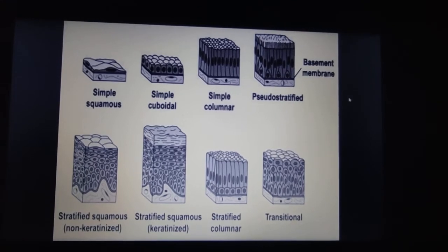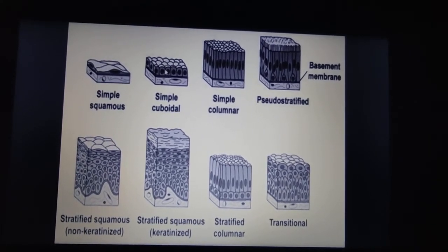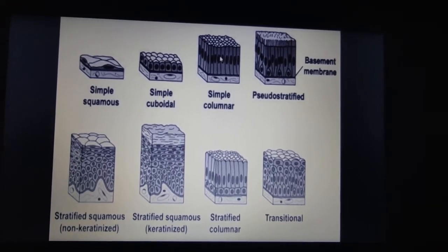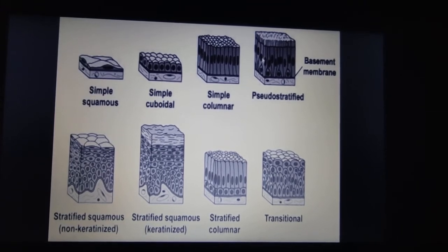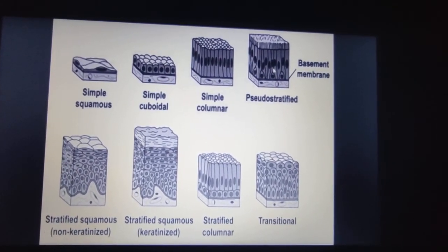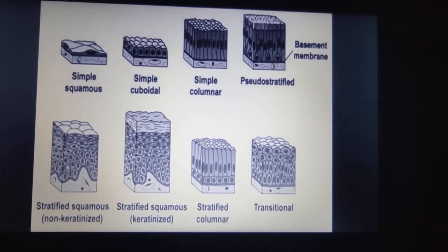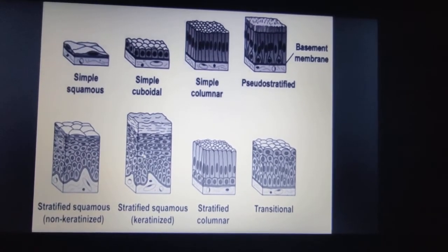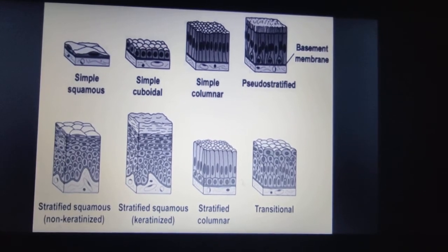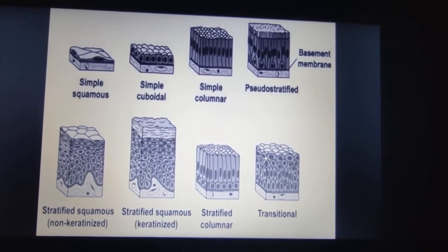In simple squamous epithelium, you can see the flattened cells. In simple cuboidal epithelium, the height and breadth are the same. In simple columnar, cells are taller than their width. In pseudo-stratified epithelium, all cells lie on the basement membrane, but some don't reach the surface. You can also see stratified squamous non-keratinized — where there is no keratin layer — and keratinized, stratified columnar, and transitional epithelium, whose most superficial layer has an umbrella shape.